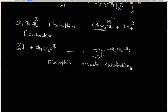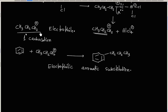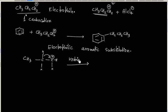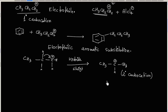Another possibility is that this 1° carbocation can rearrange. This carbocation rearranges by a hydride shift. It can give a 2° carbocation, and this carbocation is more stable. This carbocation can then act as an electrophile and attack the benzene ring.